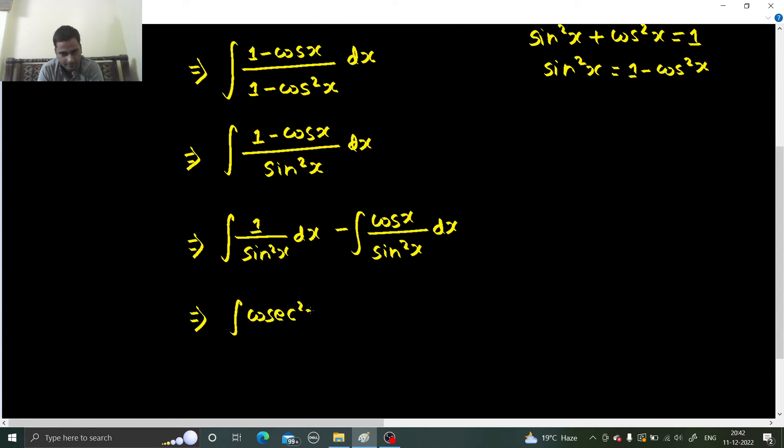1 by sin square x is cosecant square x, and cos x over sin square x you all know is cot x times cosecant x.